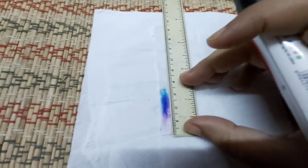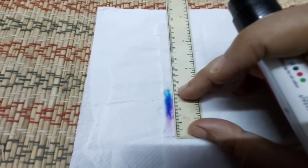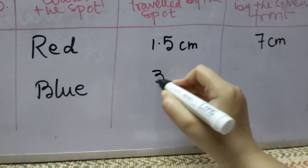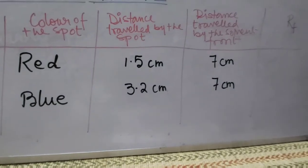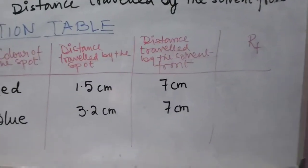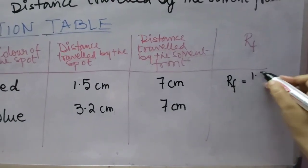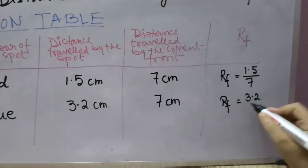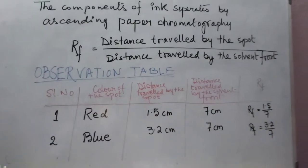And the blue color—it is intense at near about 3.2 or almost. So I'm writing here 3.2 centimeters, and here it is 7 centimeters. Now you can calculate this Rf value very easily: Rf equals 1.5 by 7, and here the Rf is equal to 3.2 by 7. It is a unitless quantity as it is a ratio of two similar quantities.